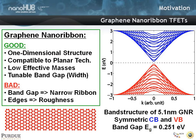It's a one-dimensional structure, compatible with planar technology. It has a low effective mass, which is good, so carriers will move rapidly. It in principle has a tunable band gap by width. The bad thing is that the band gap is dependent on the ribbon width, and there is going to be an influence of these edges on the band structure. Effects of roughness will be important, and the topic of this presentation is to see how important such fluctuations might be.